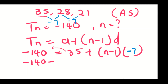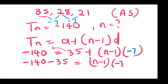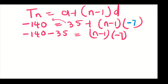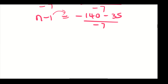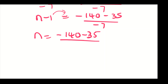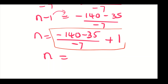Transposing: −140 − 35 = (n − 1)(−7). Dividing both sides by −7 and solving: n = (−140 − 35)/(−7) + 1. Punching this into the calculator gives n = 26.